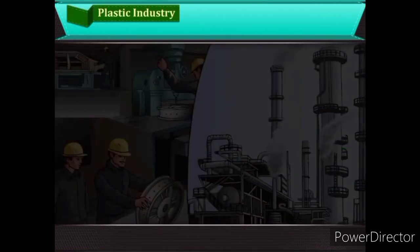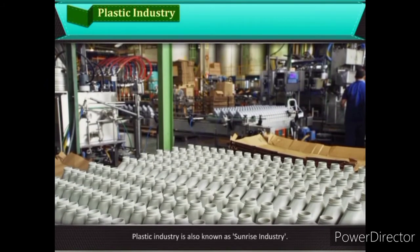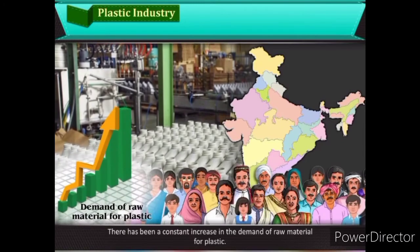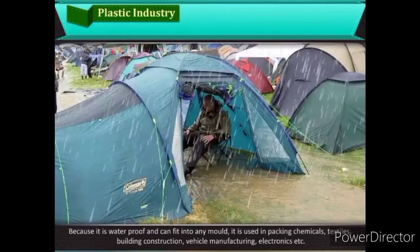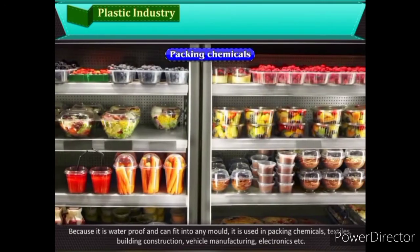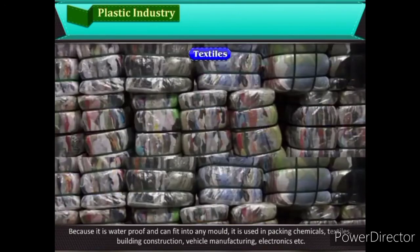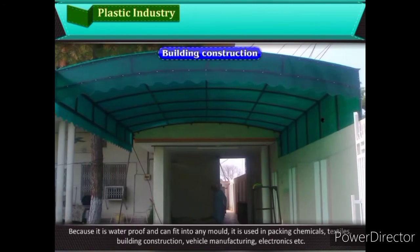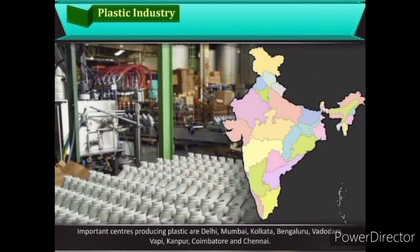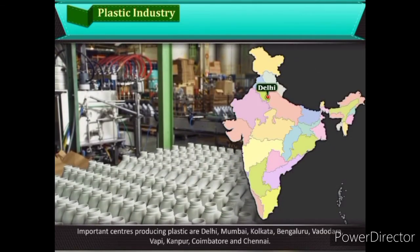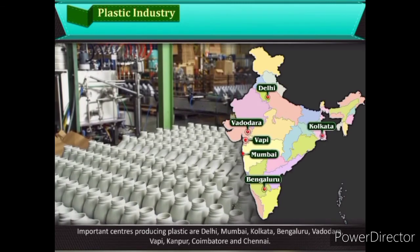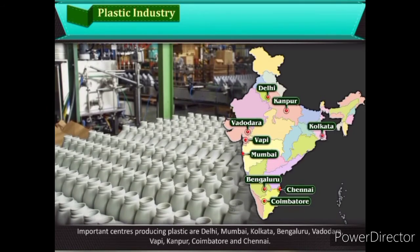Plastic Industry: Plastic industry is also known as the Sunrise Industry. There has been a constant increase in the demand for plastic raw material. Because it is waterproof and can fit into any mould, it is used in packing chemicals, textiles, building construction, vehicle manufacturing, electronics, etc. Important centres producing plastic are Delhi, Mumbai, Kolkata, Bengaluru, Vadodara, Vapi, Kanpur, Coimbatore, and Chennai.